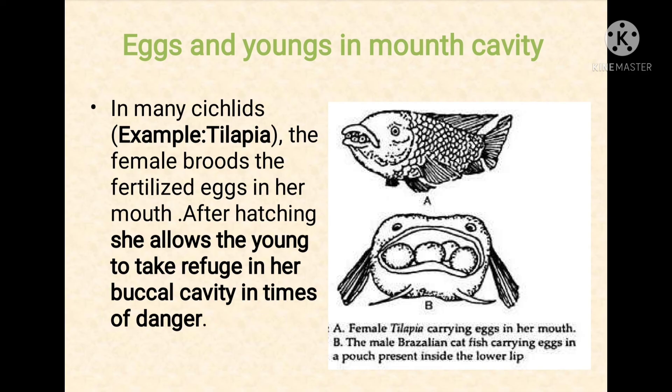The next subtype is eggs and young ones in the mouth cavity. In this method the fish keeps her fertilized eggs inside her mouth. The female broods the fertilized eggs in her mouth, and after hatching she allows the young ones to take refuge in her buccal cavity in times of danger.